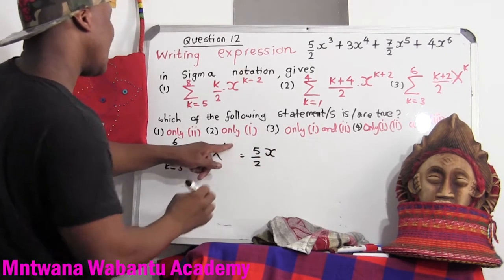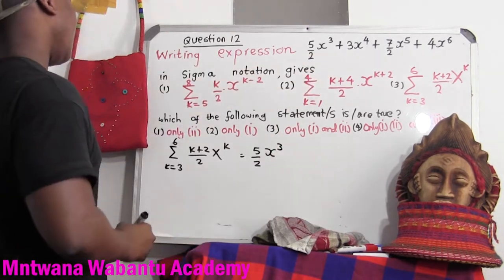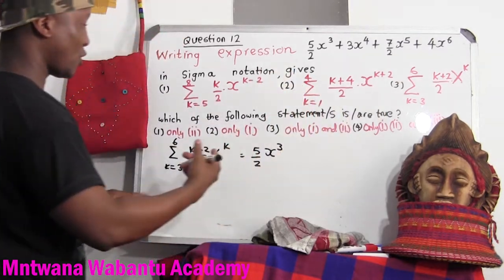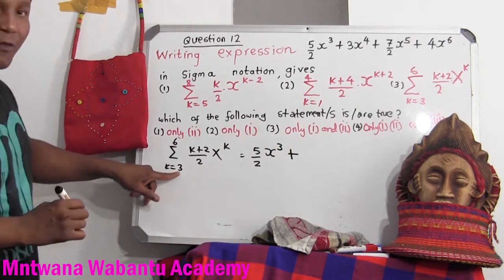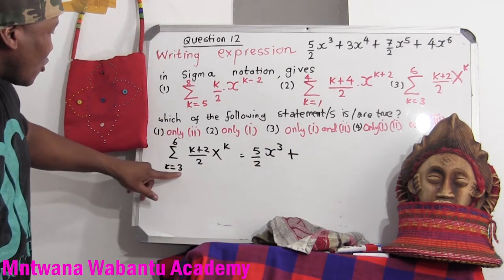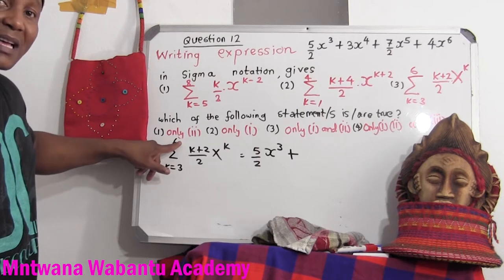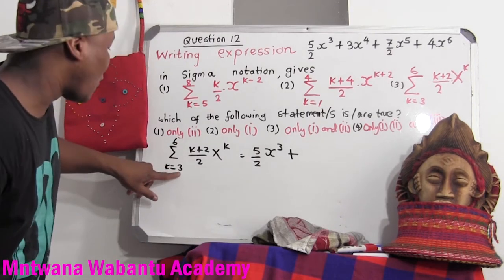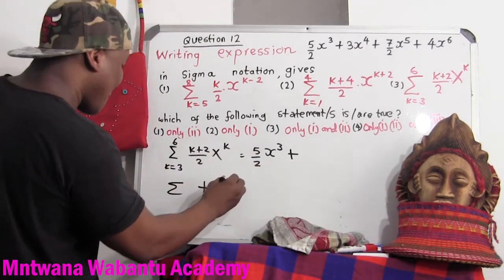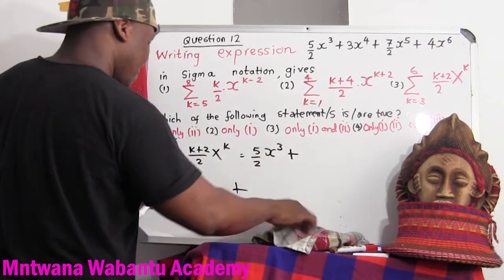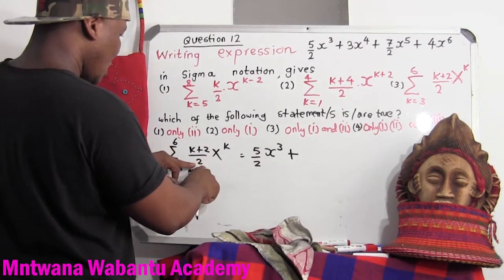I don't know the value of x. k — we start with 3. For the first term, yes, and then we sum because sigma means sum. Now we increase the value of k, because k goes from 3 to 6. If k equals 4, we put in 4: so 4 plus 2 equals 6, divided by 2 equals 3. So this second term is 3 times x to the power of k.